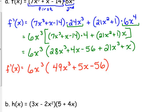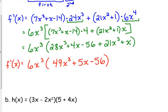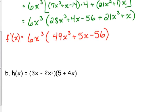Technically we can distribute the 6x cubed, but the whole point of this was to keep it in similar form to the original problem. If you had, at the beginning, distributed the 6x to the fourth into your parentheses and applied the power rule and then factored out the GCF, you should get the same answer. So that was a very — probably doesn't seem like a simple example of the product rule, but it kind of was.